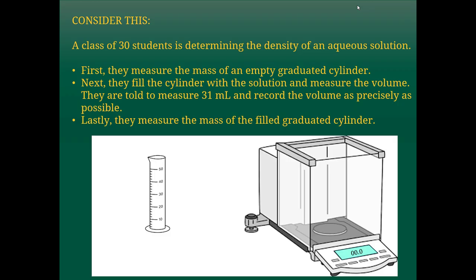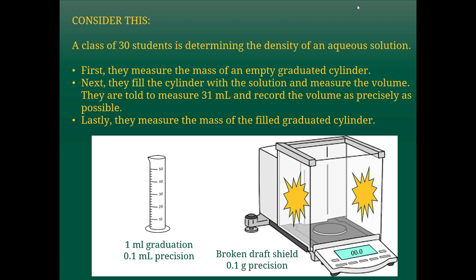So first, let's consider something. If we have a class of 30 students who are trying to determine the density of an aqueous solution, they're going to have some glassware and some tools available to them. One might be a graduated cylinder that has a 1 milliliter graduation and 0.1 milliliter precision, and we've got an analytical balance. Let's pretend that this analytical balance has a broken draft shield, and so there's lots of noise due to the wind and movement of people in the lab. So we've only got about 0.1 gram precision on this balance.